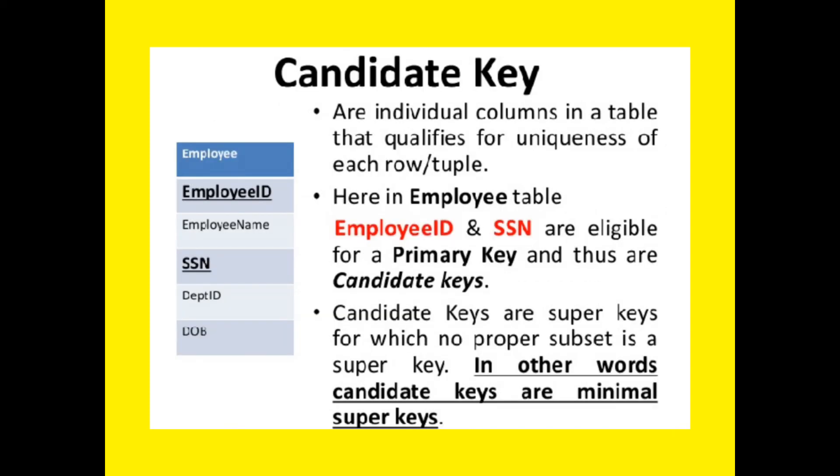Next is candidate key. Candidate keys are individual columns in a table that qualify for uniqueness of each row or tuple. In the employee table, employee ID and SSN are both eligible for a primary key and thus are candidate keys. Candidate keys are super keys for which no proper subset is a super key — in other words, candidate keys are minimal super keys. The columns which are eligible to become a primary key are known as candidate keys.